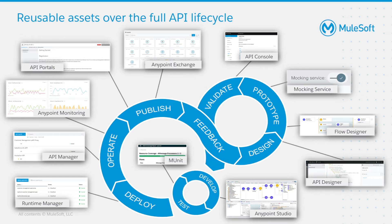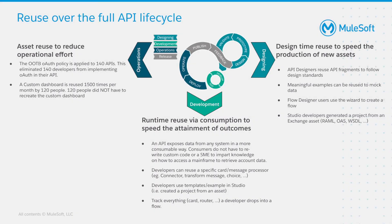Now that we've gone through the full life cycle of an API, let's zoom in and see some examples of how reuse can be achieved throughout the different phases. In general, we can summarize the steps into four major phases: designing, development, operations, and release.